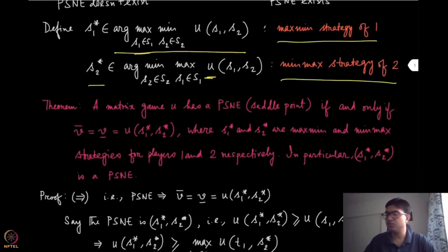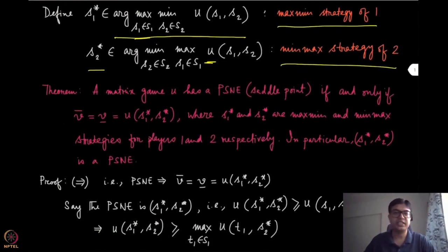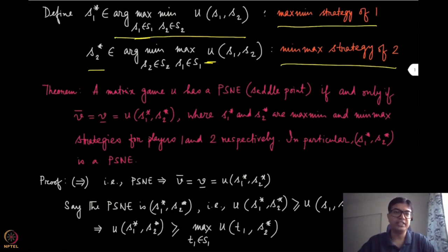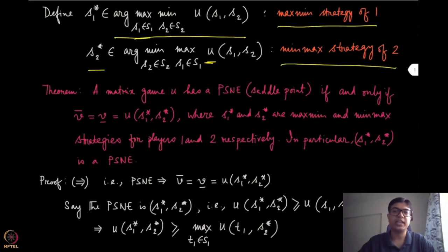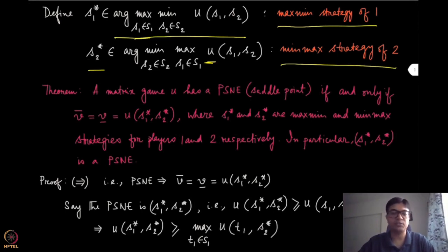Here is the theorem which formally states what we said earlier: a matrix game U has a PSNE, or saddle point, if and only if the minmax and the maxmin values are equal, and this equals the value of the matrix at S1 star and S2 star — where S1 star and S2 star are the maxmin and minmax strategies for players 1 and 2 respectively. Moreover, this strategy profile is the PSNE of the game.